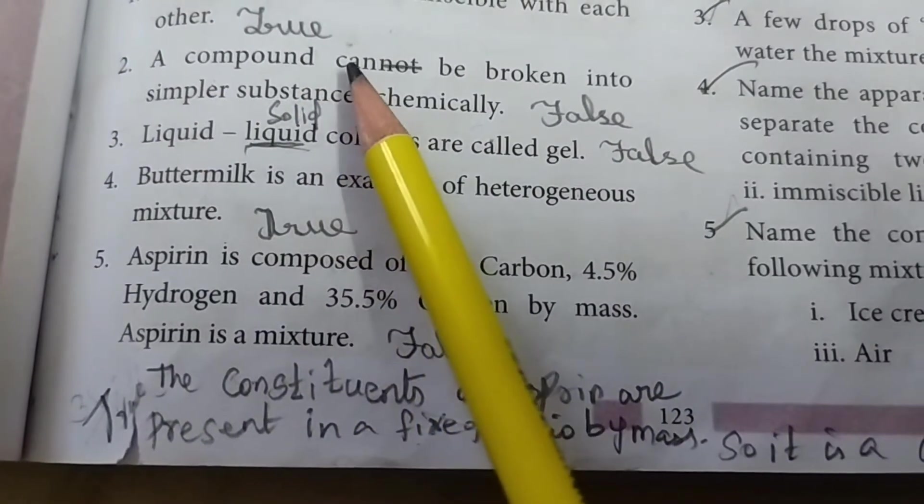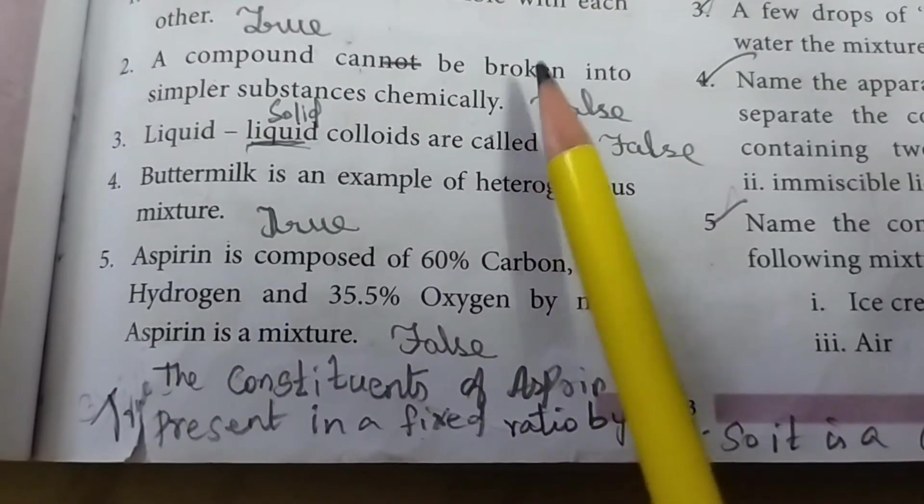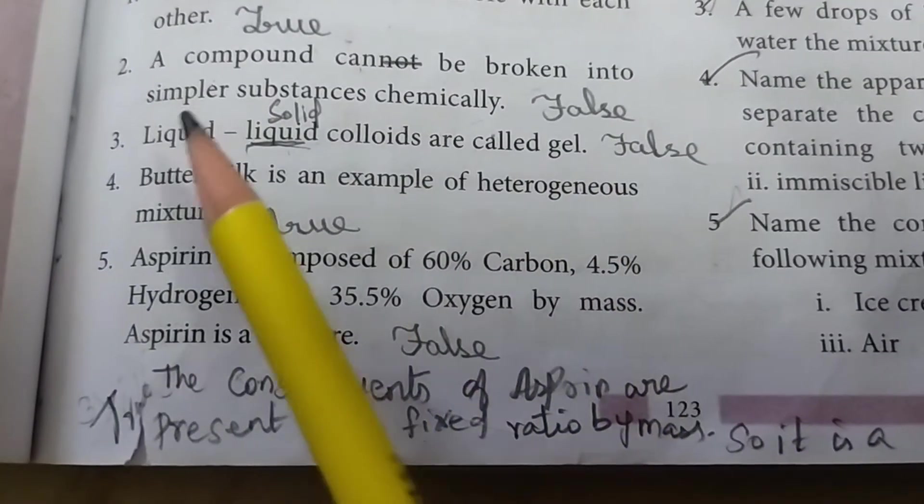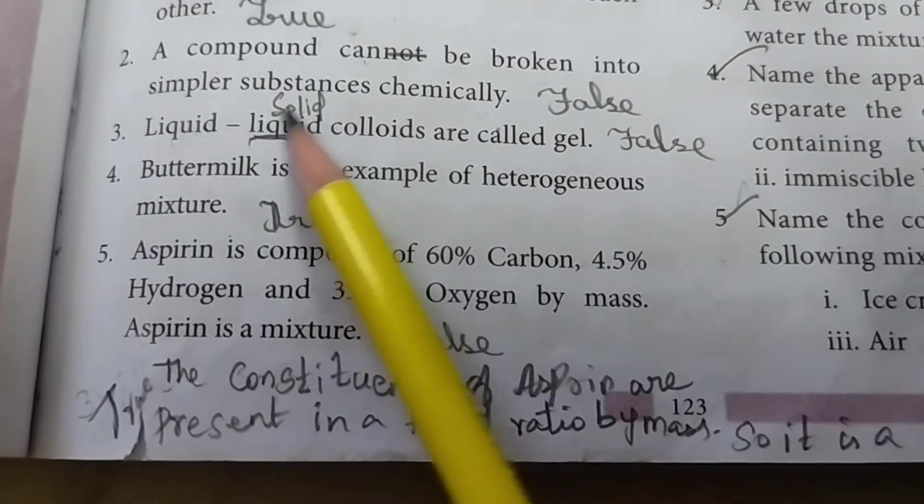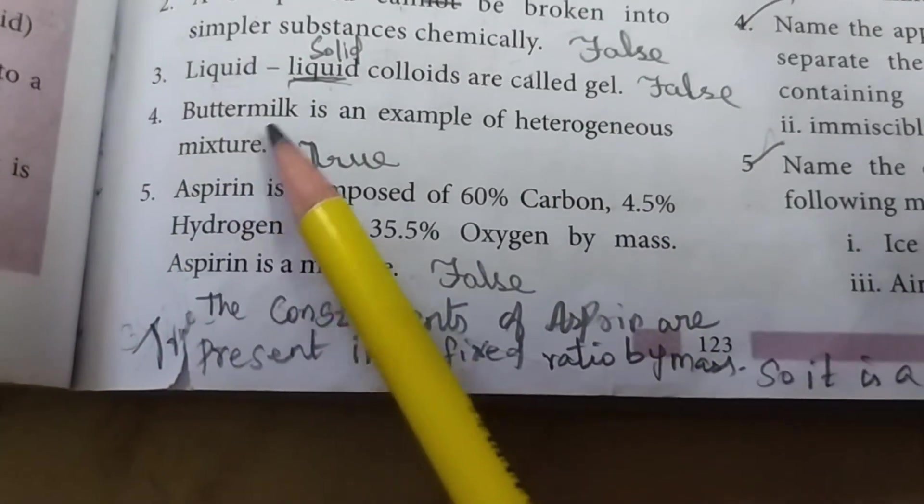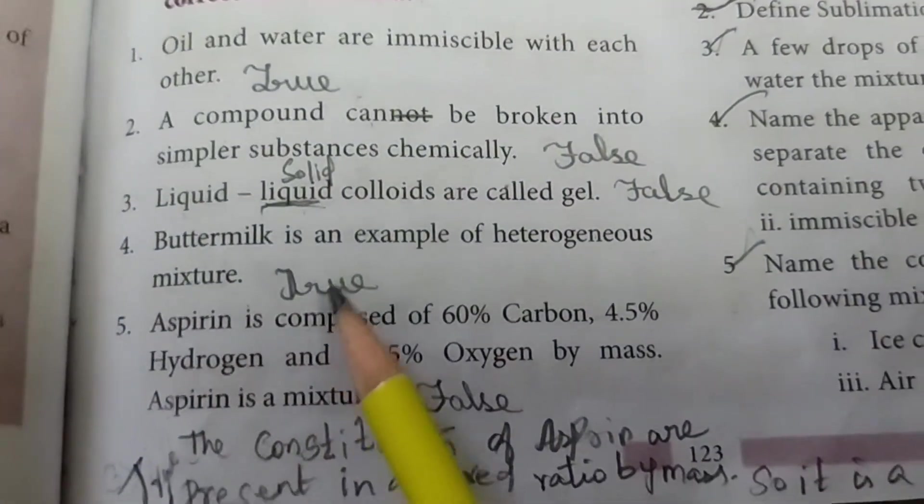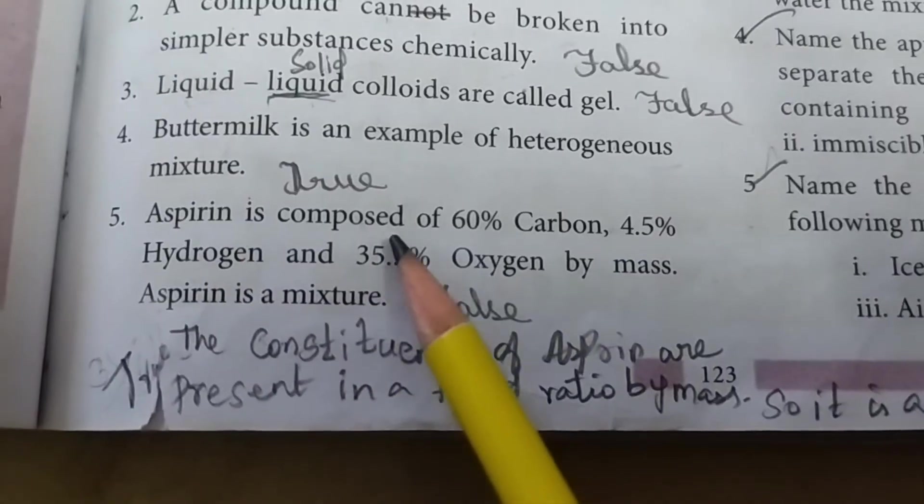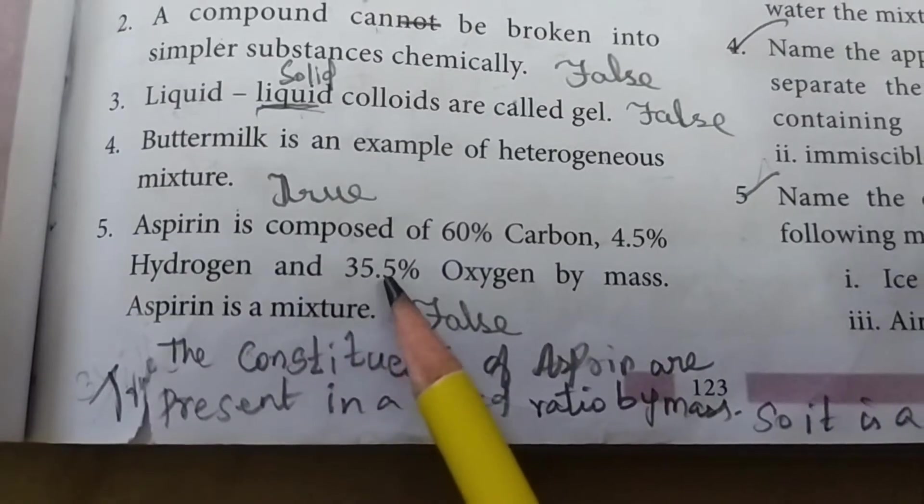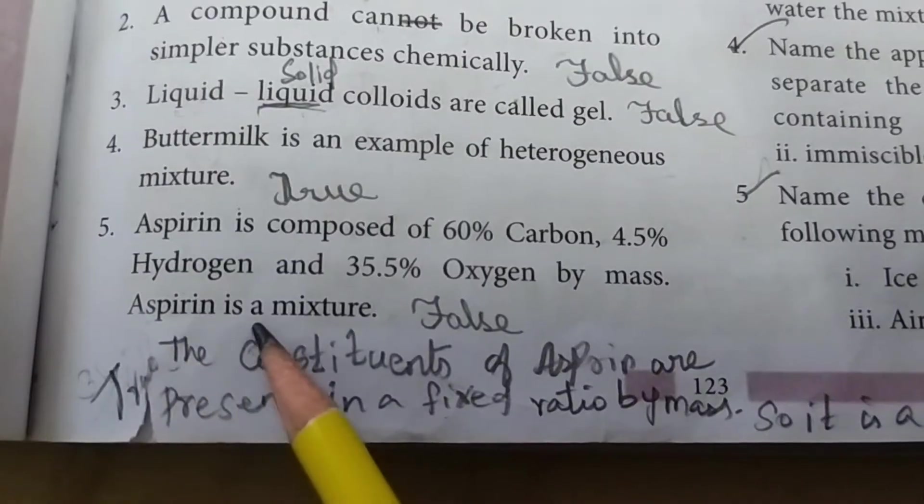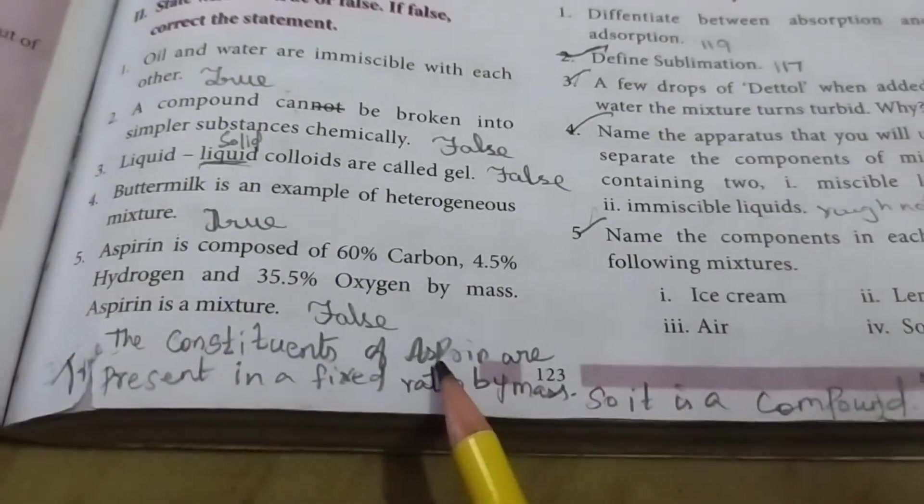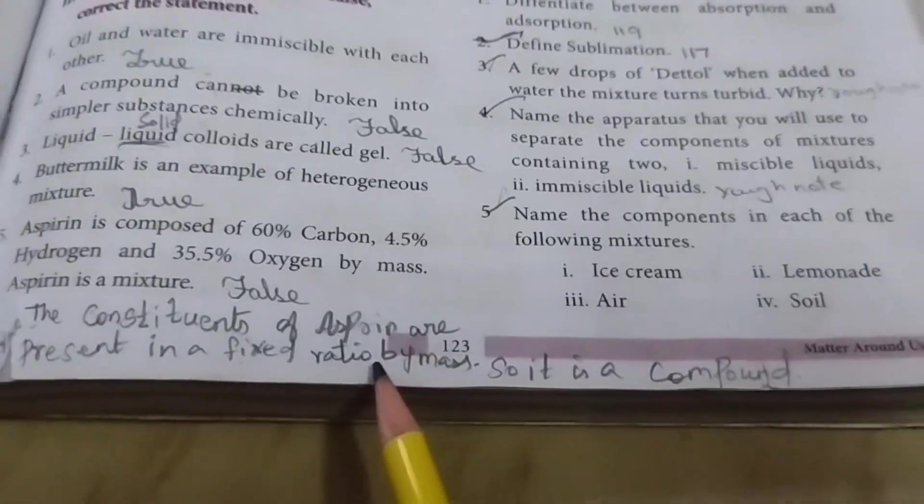Third: Liquid to liquid colloids are called gel - false. The correct answer is liquid to solid colloids are called gel. Fourth: Buttermilk is an example of heterogeneous mixture - true. Fifth: Aspirin is composed of 60% carbon, 4.5% hydrogen, and 35.5% oxygen by mass. Aspirin is a mixture - false. The constituents of aspirin are present in a fixed ratio by mass, so it is a compound.